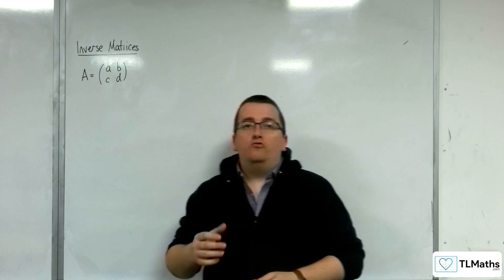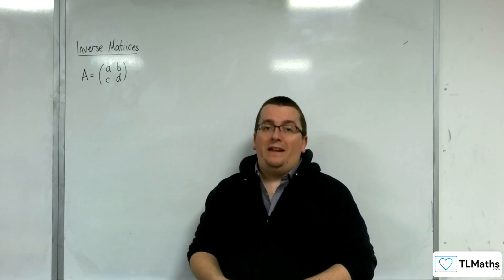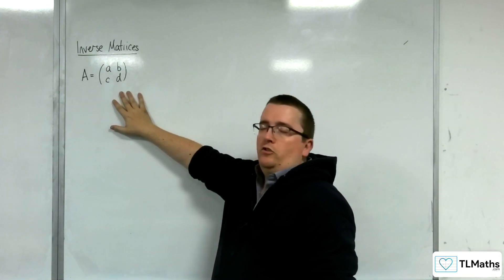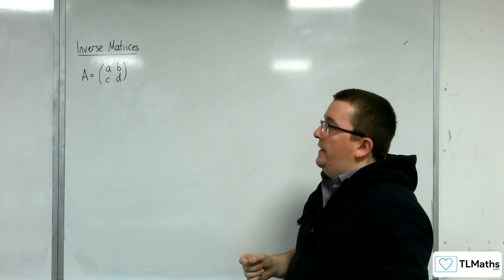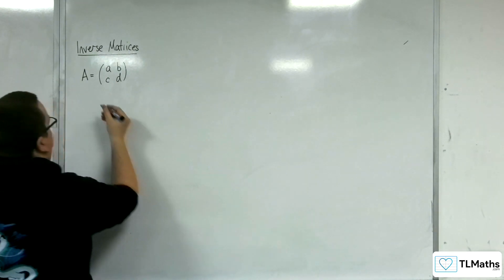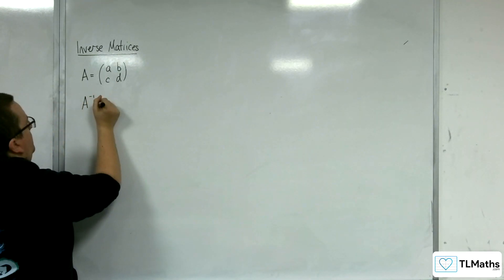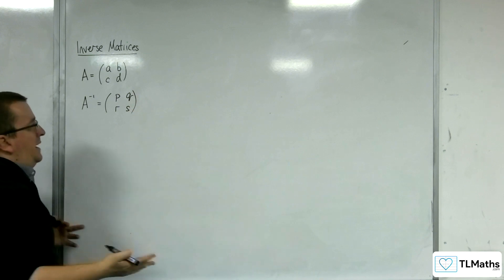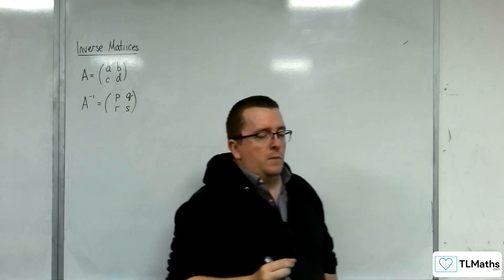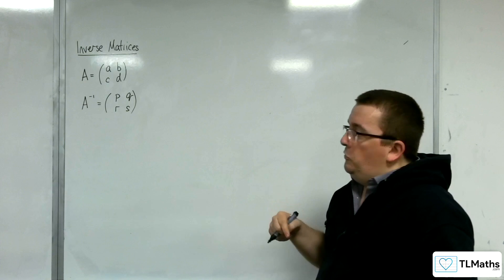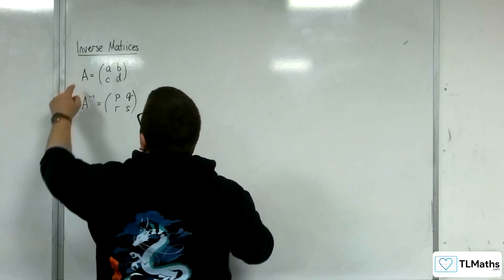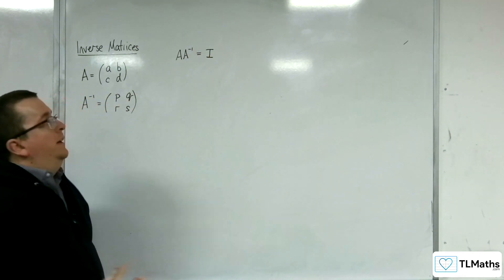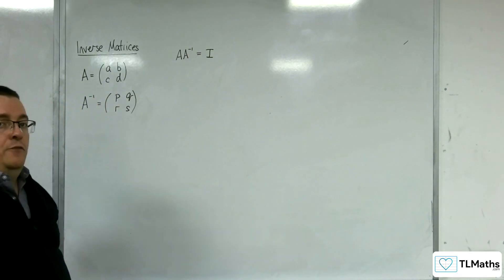In this video, I'm going to derive the 2x2 inverse matrix. So, let's say that we have a 2x2 matrix A, which has entries A, B, C, D. Then its inverse matrix, A⁻¹, will have entries P, Q, R, S. We don't know what P, Q, R, and S are — that's what we need to work out. But we do know that A times A⁻¹ equals the identity matrix, by definition of what we understand the inverse matrix to be.